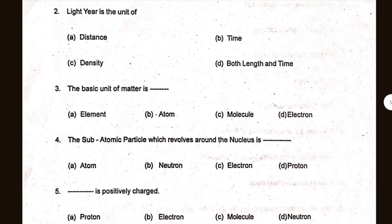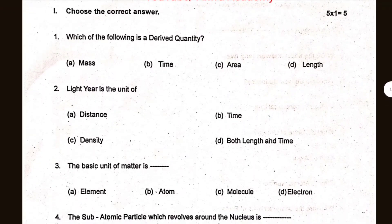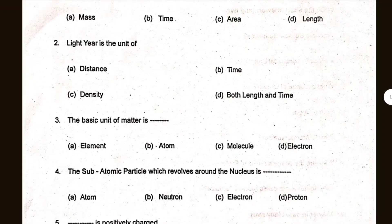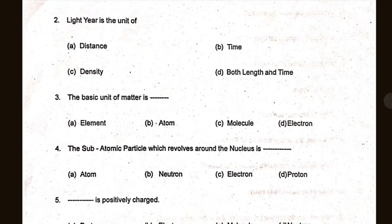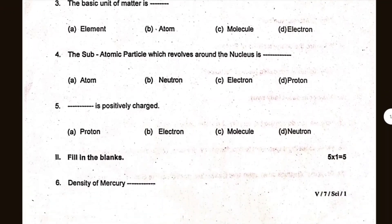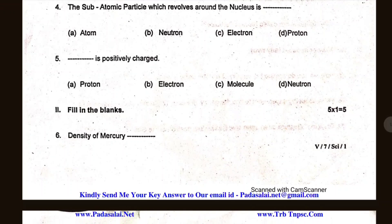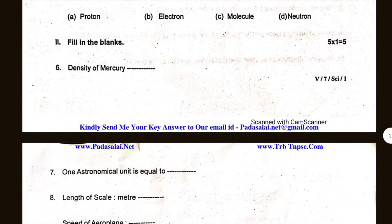Let's see. The basic unit of matter is? The atomic particle which revolves around the nucleus is? Is positively charged. Let's see. Density of mercury. 1 astronomical unit is equal to.